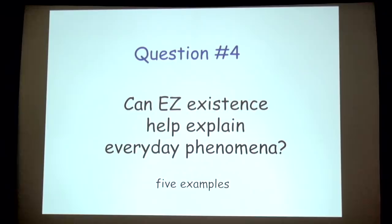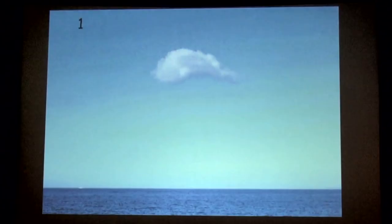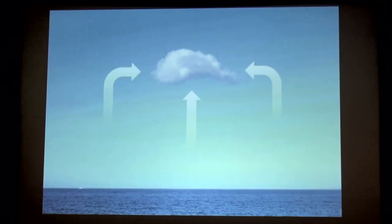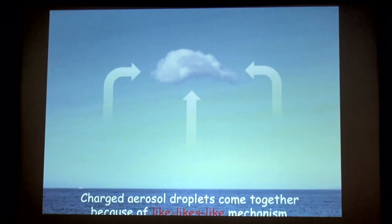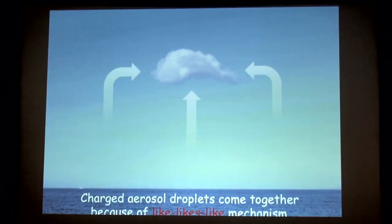EZ water's existence helps explain everyday phenomena. I want to give you five examples briefly. The first example is the cloud. Water is evaporating from all over the place — not only from just under the cloud, but also from elsewhere. The question is, how come there's a cloud only in one place? It appears the water molecules are evaporating and condensing, but what brings those water aerosol droplets together? I suggest they come together because of the so-called like-likes-like mechanism.